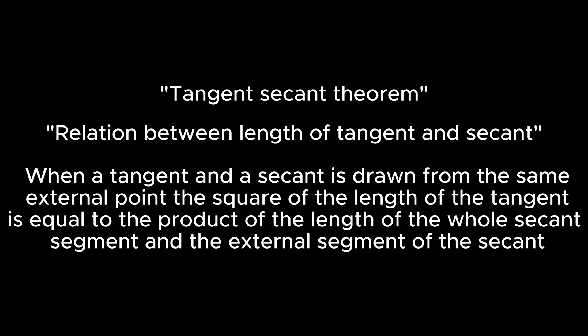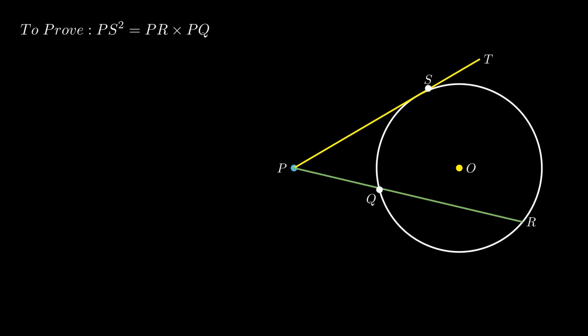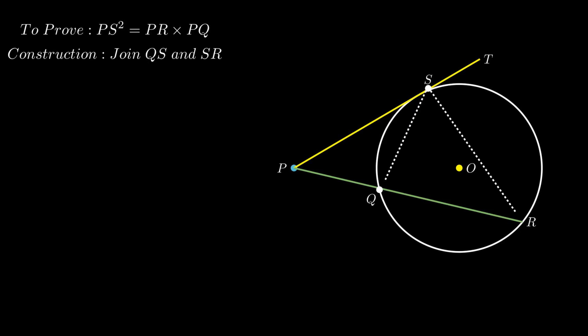To prove this, consider a circle with center O and an external point P. From this point P, a tangent PT and a secant PQR are drawn, with the secant intersecting the circle at points Q and R. Let S be the point of contact of the tangent on the circle. We need to prove that PS² equals PR × PQ. Join Q to S and S to R.